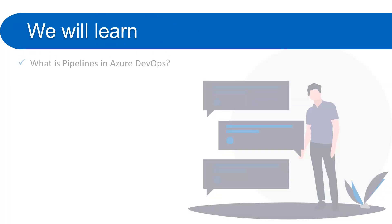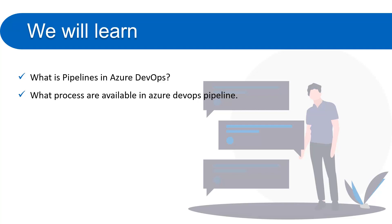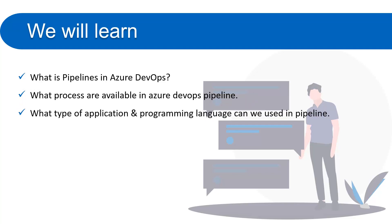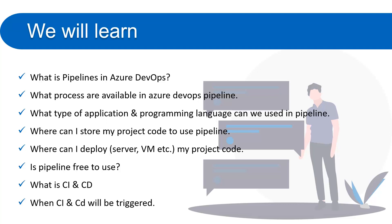In this video we will learn: what is a pipeline in Azure DevOps, what processes are available in Azure DevOps pipeline, what types of applications and programming languages can be used in pipeline, where can I store my project code to use pipeline, where can I deploy my project code, is pipeline free or do I need to pay, and what is CI and CD and when will CI and CD be triggered.